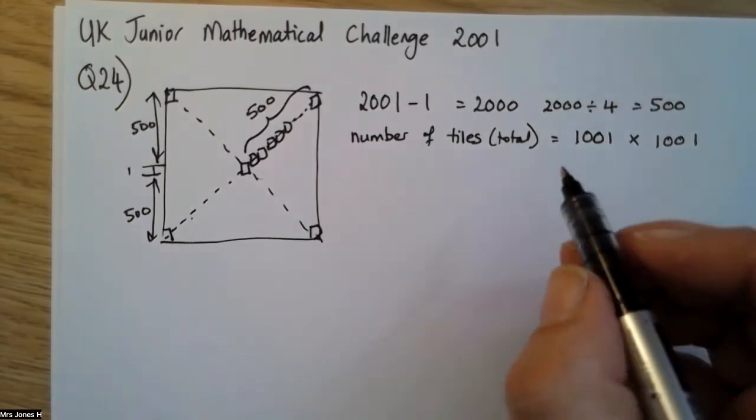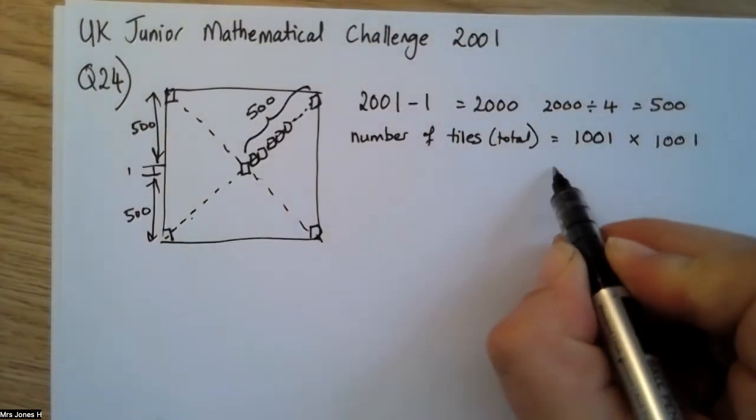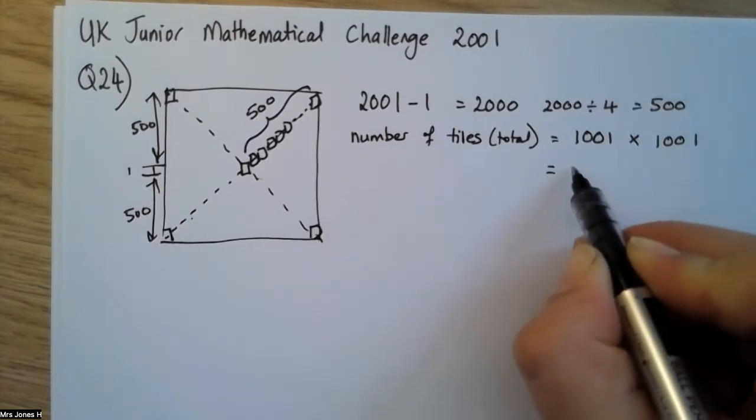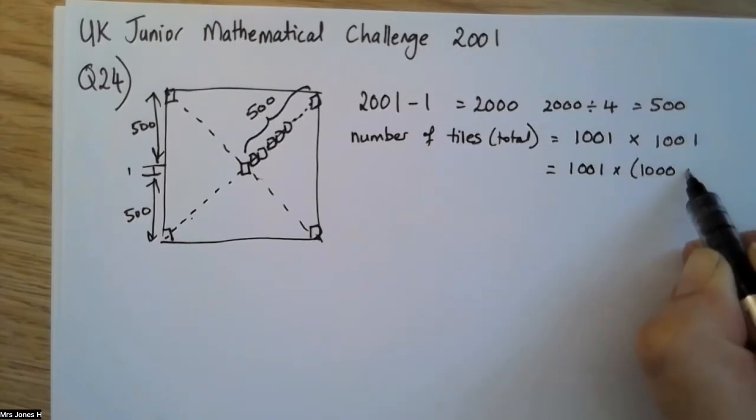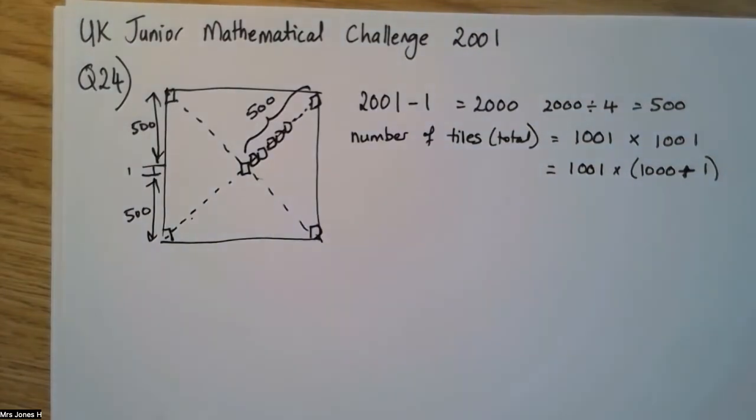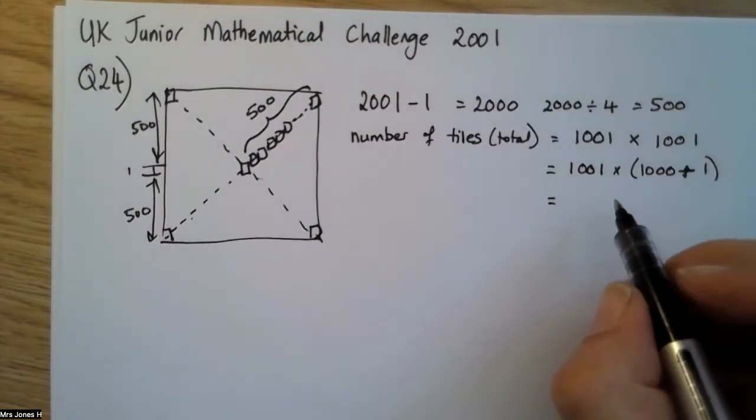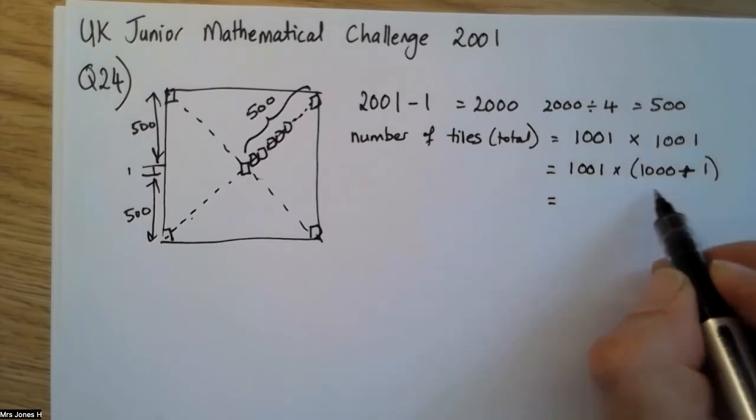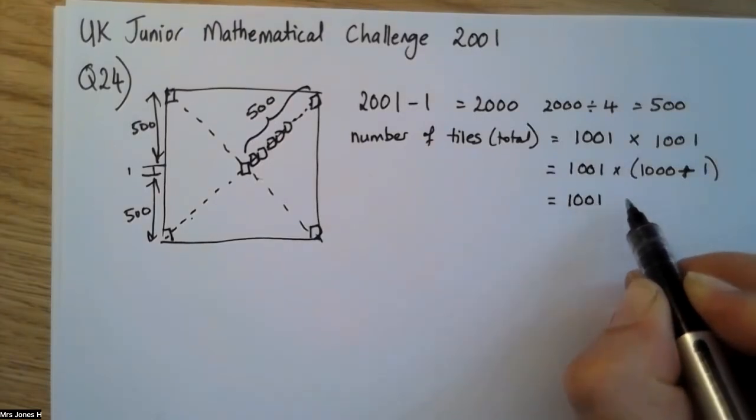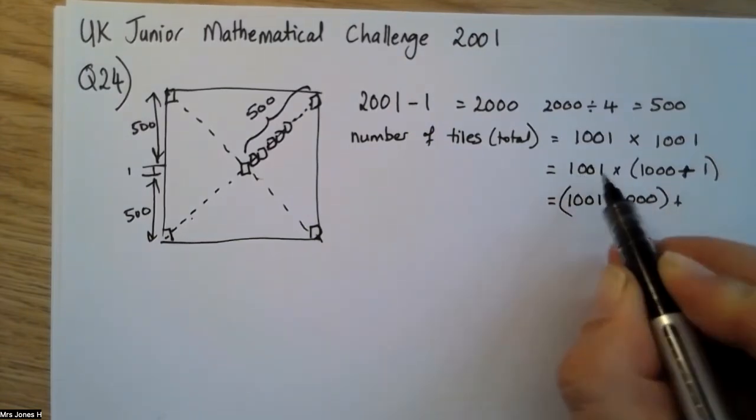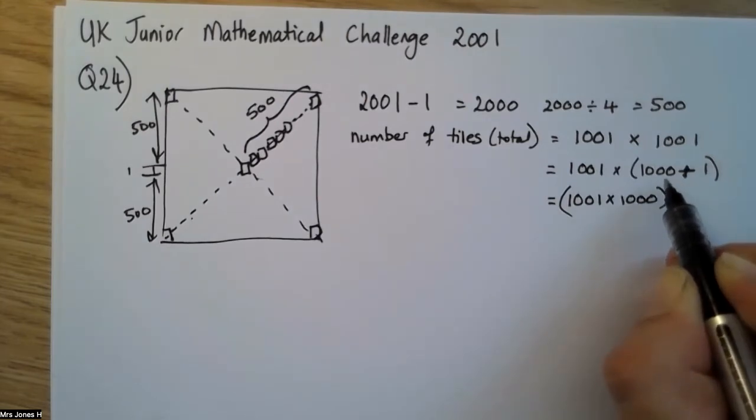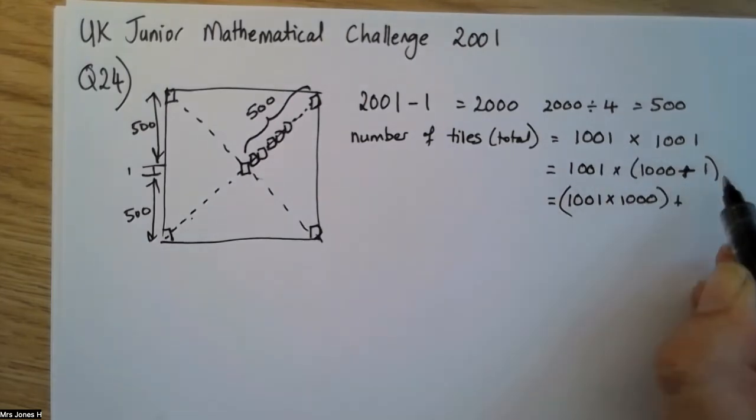You can work this out whichever way you like. Personally I quite like thinking about this as being 1000 and add one. Because then using the distributive property, what I can do is multiply everything outside the bracket with everything inside the bracket, and then this with this.